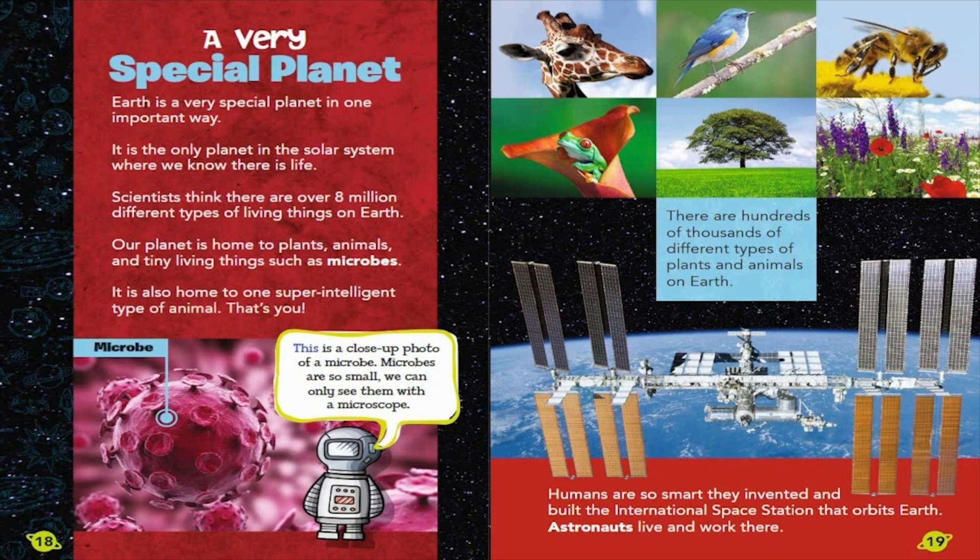This is a close-up photo of a microbe. Microbes are so small, we can only see them with a microscope. There are hundreds of thousands of different types of plants and animals on Earth. Humans are so smart, they invented and built the International Space Station that orbits Earth. Astronauts live and work there.